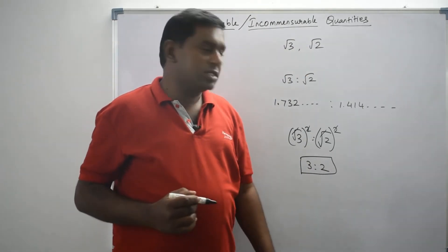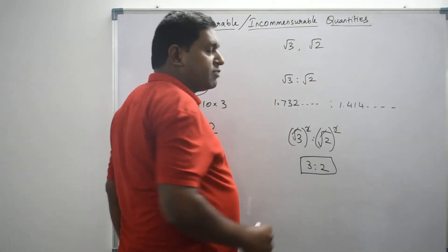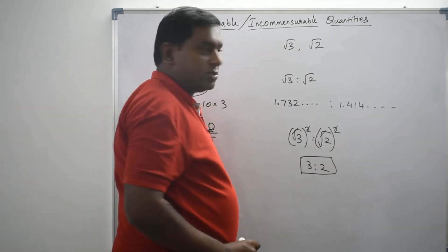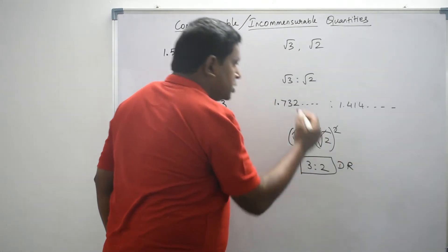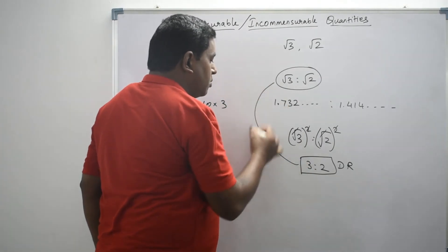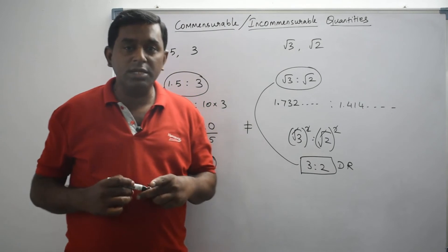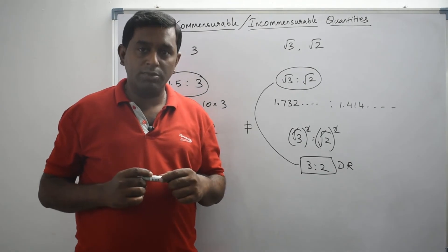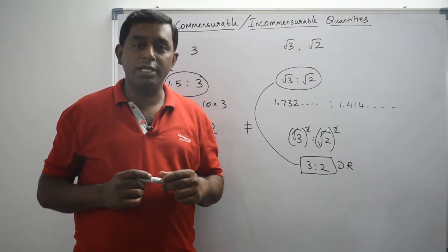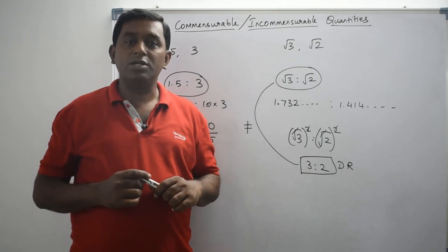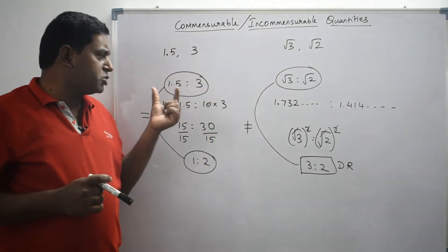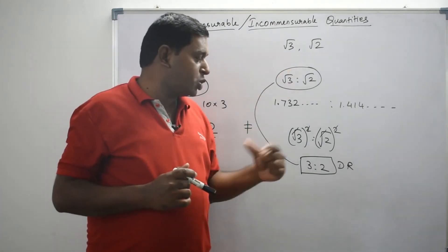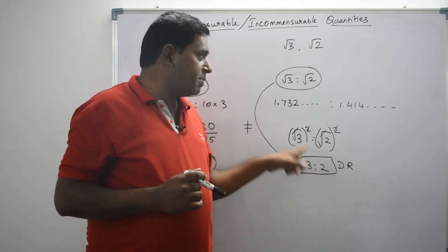Here is an important thing to notice: squaring both terms of a ratio gives you a duplicate ratio, not a ratio equal to the given ratio. This duplicate ratio and the given ratio are not equal. That is why, from the beginning, when verifying whether quantities are commensurable or incommensurable, you are allowed to use only multiplication or division. Only those operations preserve the equality of the ratio. Squaring both terms gives a duplicate ratio, which cannot equal the original.